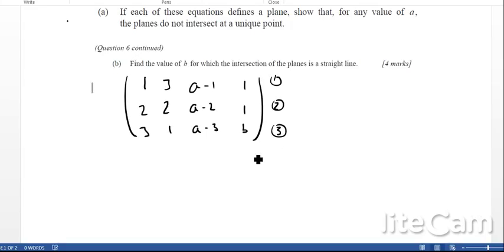We can label this as 1, this is 2, and this is 3. We can keep the top row the same: 1, 3, a minus 1, and 1. So that's equation 1. This one here, I do equation 2 take away 2 times equation 1. That will give me 0, minus 4, minus a, and minus 1. You can see I've got the 0 here that I wanted.